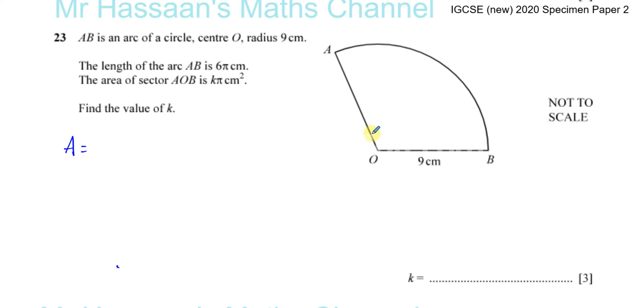This angle here, θ, is the angle made by this sector from the center of the circle. That's important because the sector is a portion of the area of the whole circle. If you think about it, sector AOB is like a fraction of the whole circle.